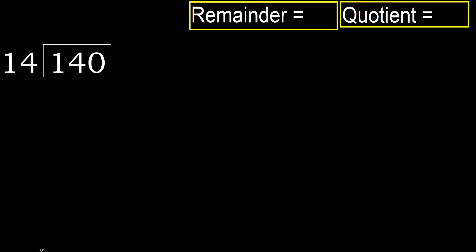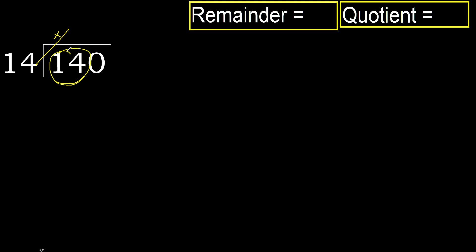140 divided by 14. 1 is less, therefore next. 14 is not less, therefore with 14 — 14 multiplied by which number is nearest to 14?